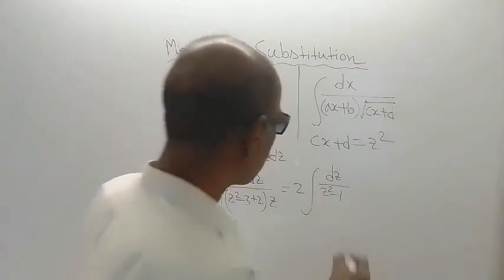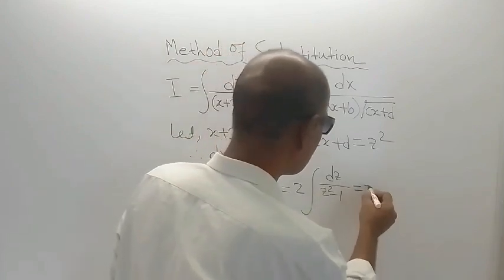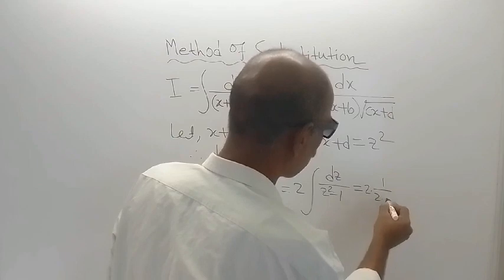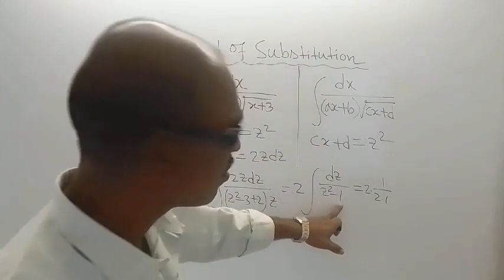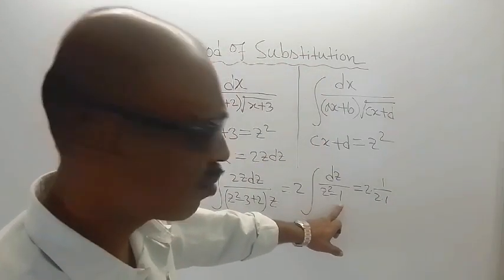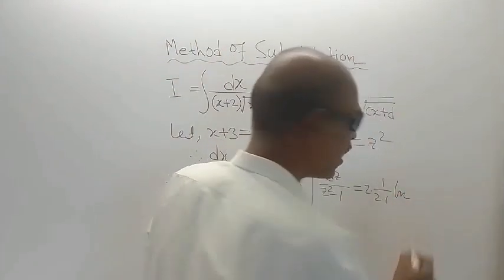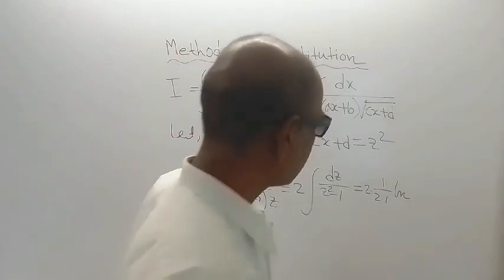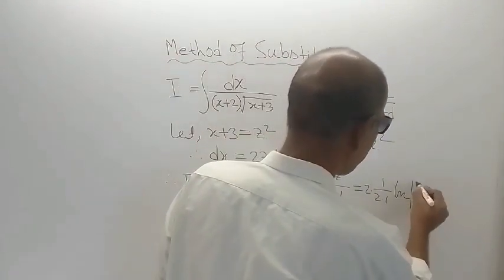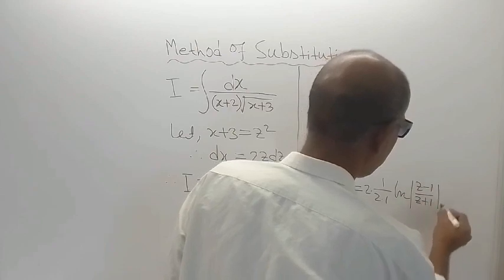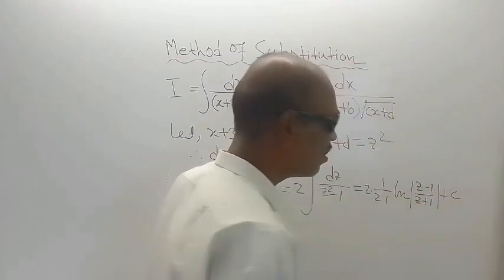What is the formula? Formula is 2 into 1 by 2 into 1. This is equal to 1 square. So 2 into 1 and ln, ln means log to the base e, ln (z minus 1) divided by (z plus 1) plus a constant of integration c.